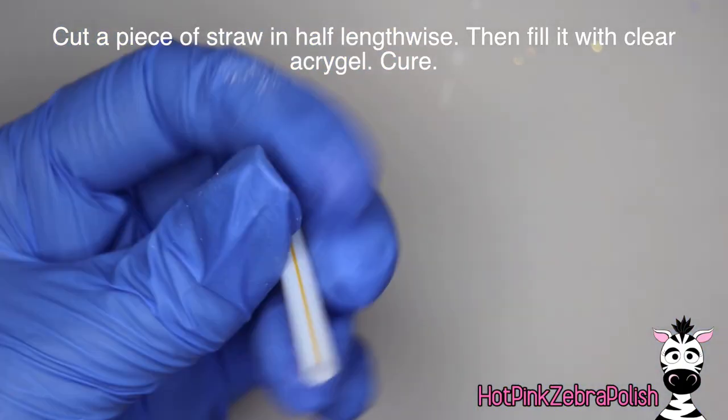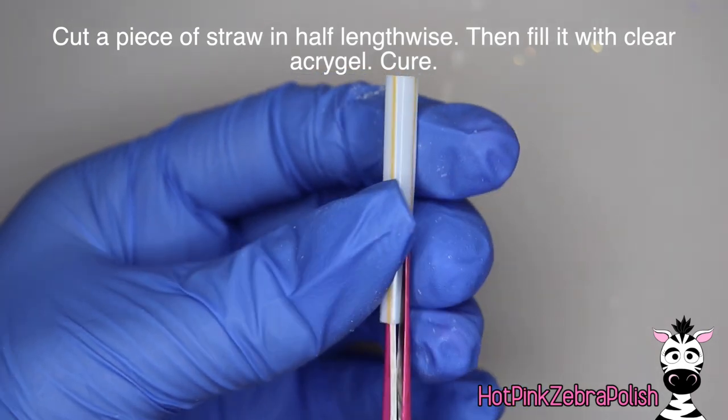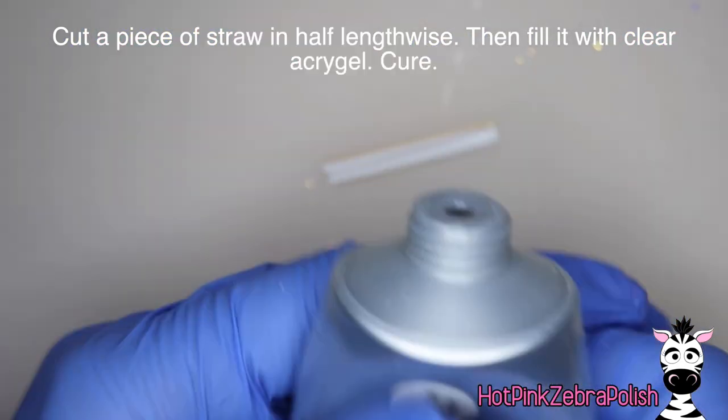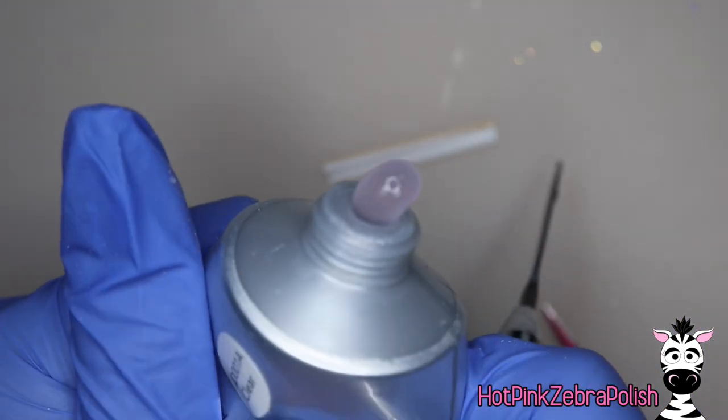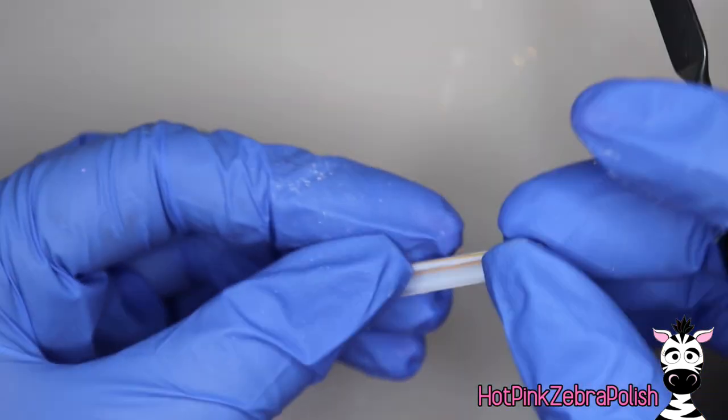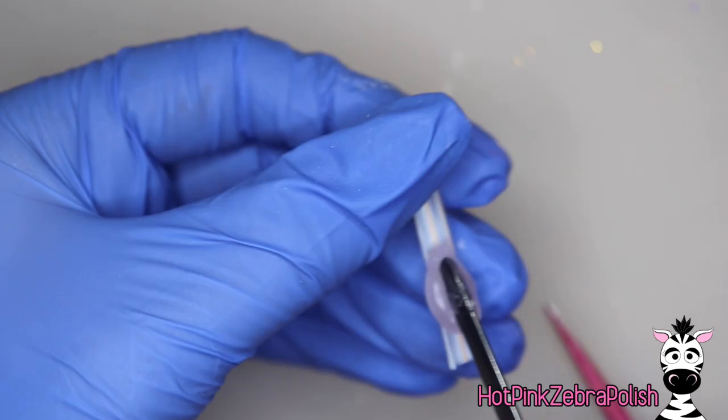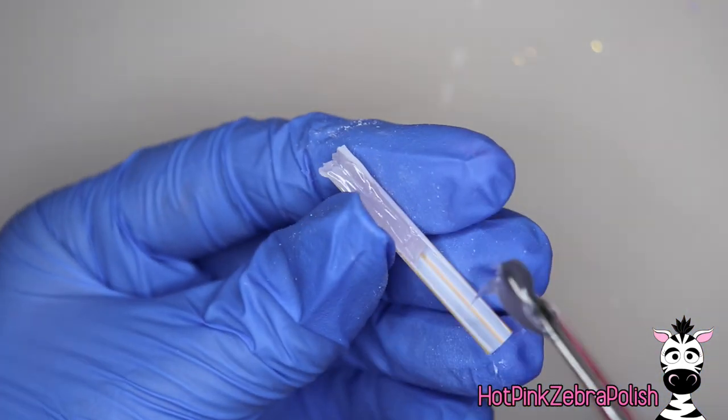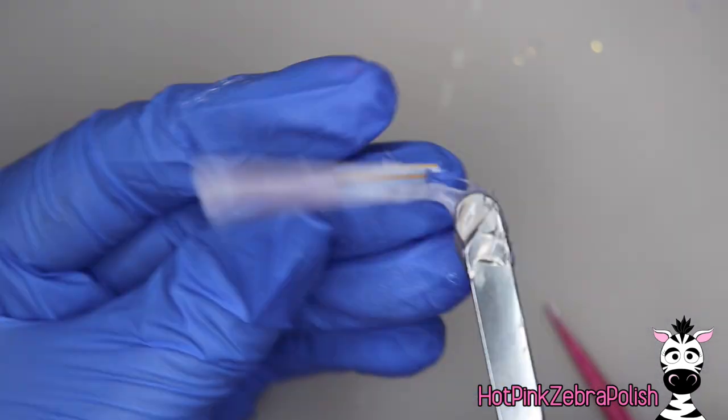So now cut off a piece of a straw and if it has the little stripes on it fantastic, cut it in half lengthwise and you can use those little stripes as a guide. Then you're going to fill it with clear acrogel.